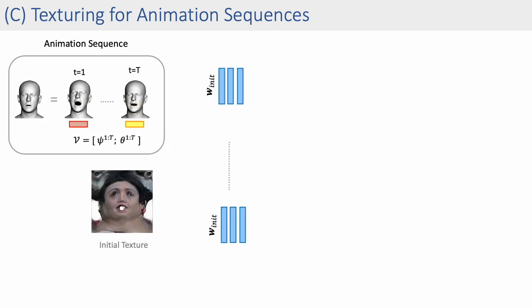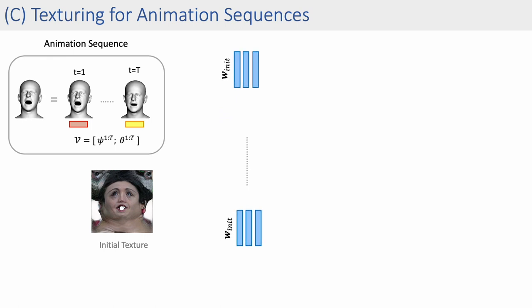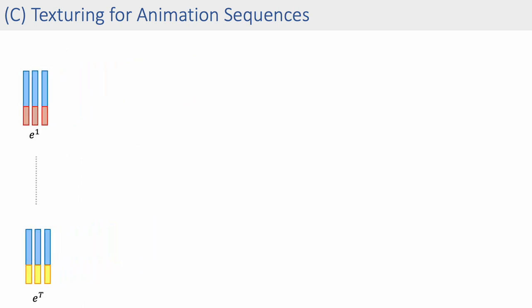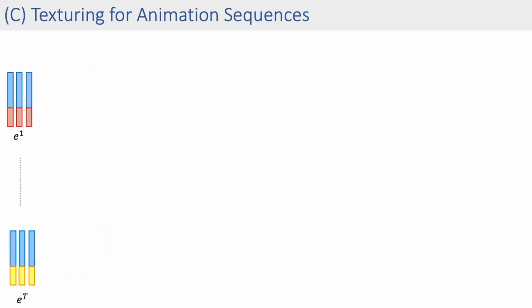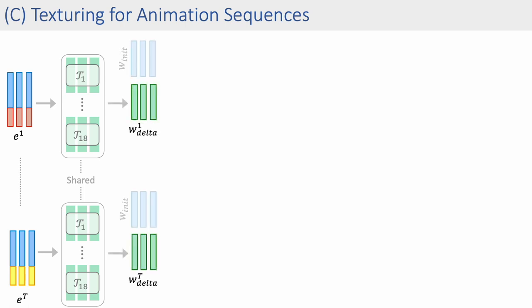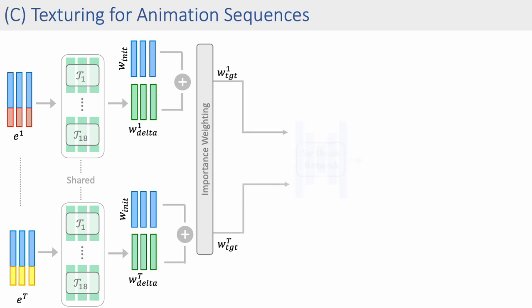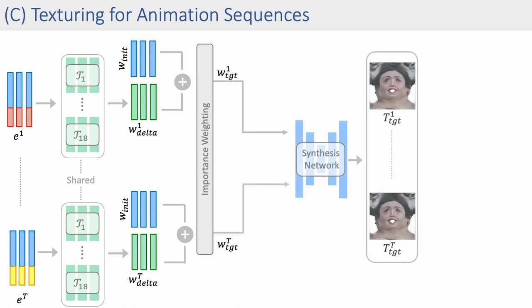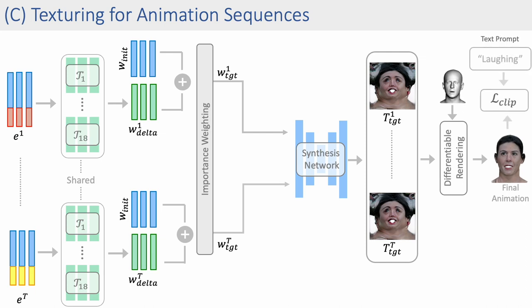Given an animation sequence with estimated expression and pose codes, and an initial texture map, we first concatenate the expression and pose codes to the initial texture code to generate a corresponding input sequence. The texture mapper is shared across different timestamps to produce time-dependent texture offsets for the initial texture codes. These predicted codes are then updated with importance weights to generate the texture maps for each timestep. The animation sequence is then differentially rendered with these predicted texture maps and guided by a CLIP loss.